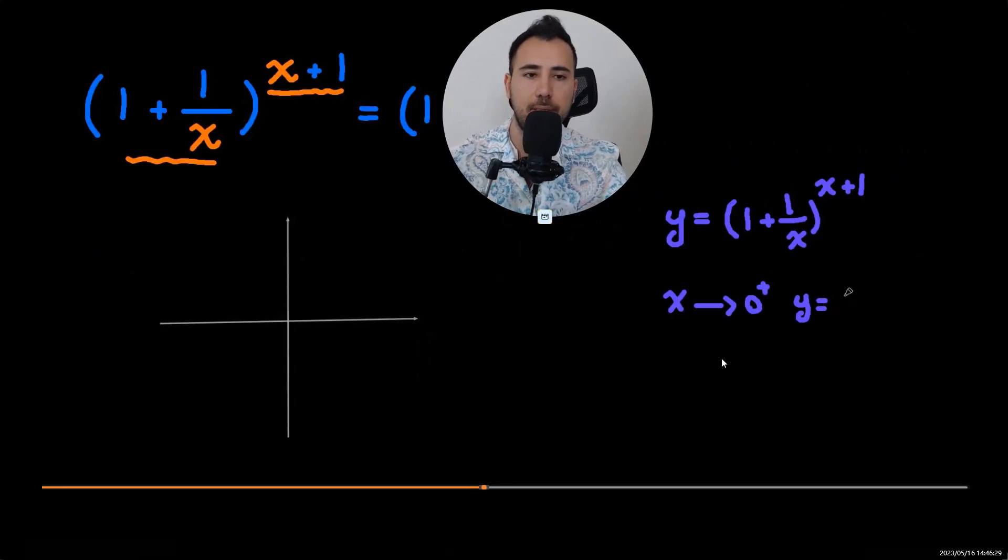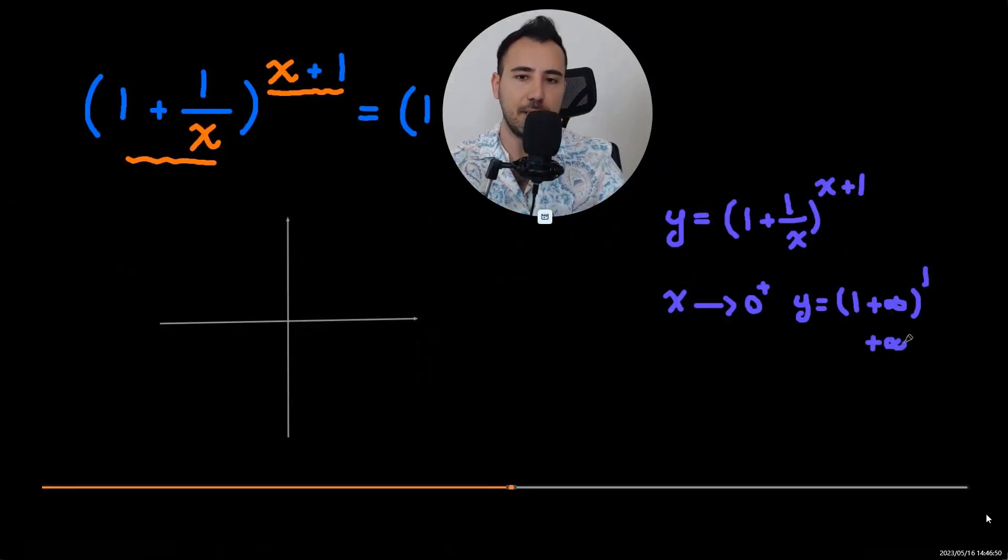Now we're going to draw this graph y = (1 + 1/x)^(x+1). If x is going to be approaching zero from right, the value of y will be one plus one over... one over zero from right is going to be infinity, so the beginning of the graph would look like this.